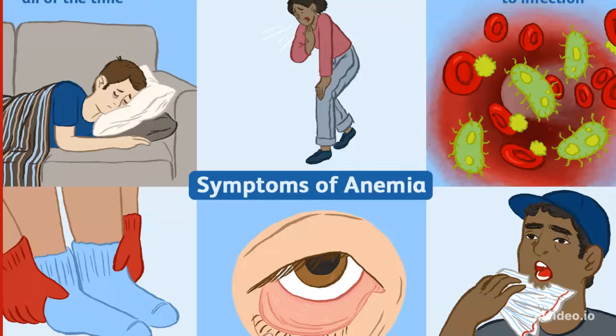Some common symptoms present in anemia are shortness of breath on slight efforts, insomnia, difficulty in concentration, cold fingers and toes for a long period of time even with efforts to keep them warm, and yellowish discoloration of the skin and the conjunctiva beneath the eyes. If you often experience these symptoms, give your health priority and get a routine blood test done.